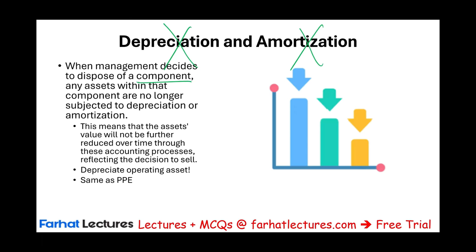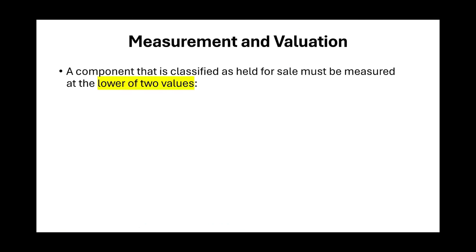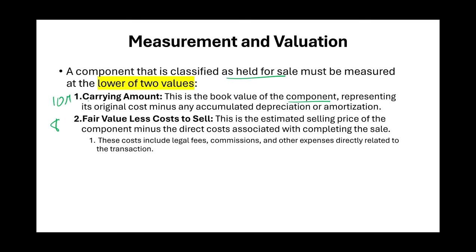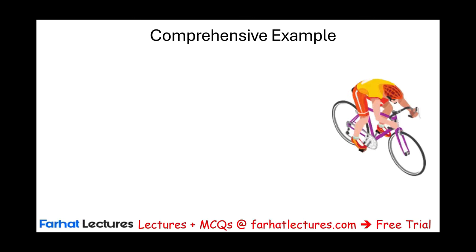But if you have an impairment loss, just like with any asset, you will reduce the value of this component. A component classified as held for sale must be measured at the lower of two values: the carrying value or the fair value less cost to sell. The carrying value is the book value representing original cost minus any accumulated depreciation or amortization. So if the book value is $10 million and fair value is $8 million, we report it at $8 million and take a loss of $2 million. Cost to sell includes legal fees, commissions, and other expenses directly related to the transaction. The best way to illustrate this is with an example.